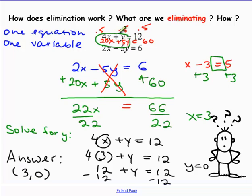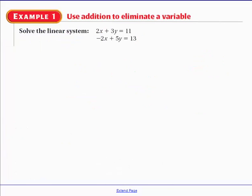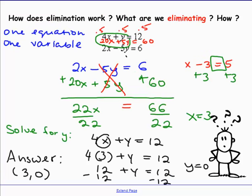The idea of elimination is to add the left side of one equation to the left side of the other, and the right side to the right side. It keeps things equal, but we're trying to eliminate one of the variables — x or y. That is why it's called elimination.